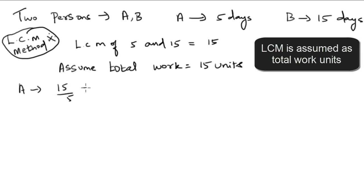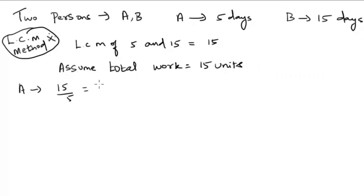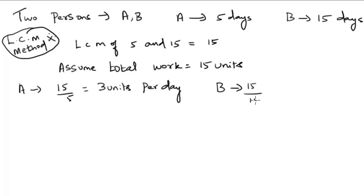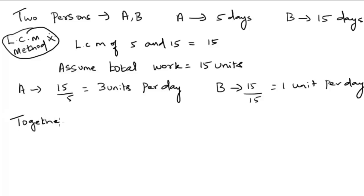The amount of work done by A in one day is equal to 15 units divided by 5 days, which equals 3 units per day. Similarly, the work done by B per day equals 15 divided by 15, which equals 1 unit per day. Together, A and B can do 3 plus 1, which is 4 units per day.